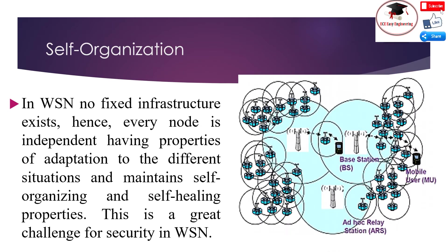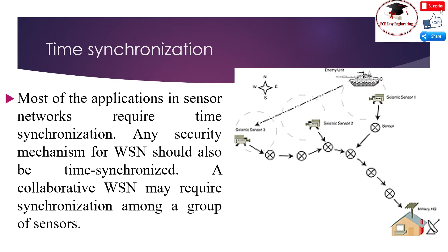Self-Organization: In WSN, no fixed infrastructure exists; hence every node is independent, with properties of adaptation to different situations and maintaining self-organizing and self-healing properties. This is a great challenge for security in WSN. Time Synchronization: Most applications in sensor networks require time synchronization. Any security mechanism for WSN should also be time synchronized, and a collaborative WSN may require synchronization among a group of sensors.